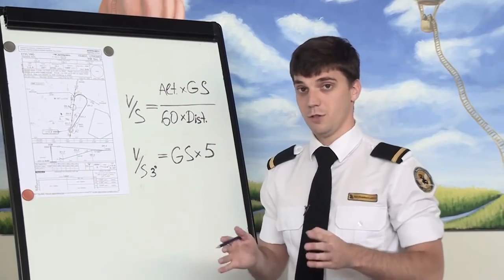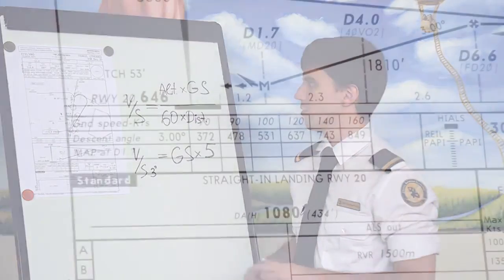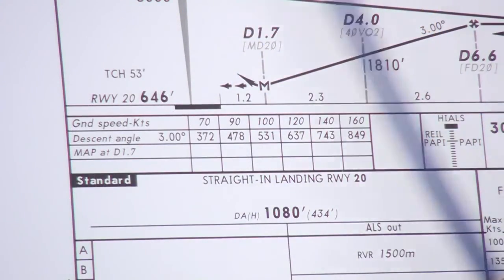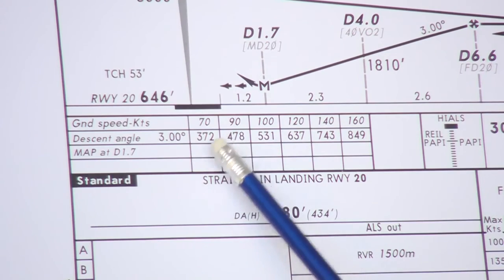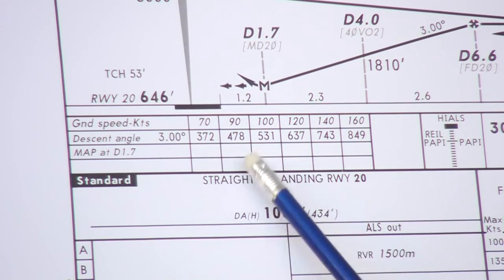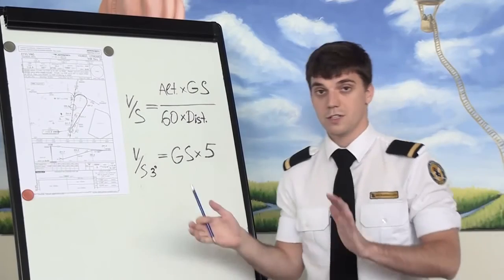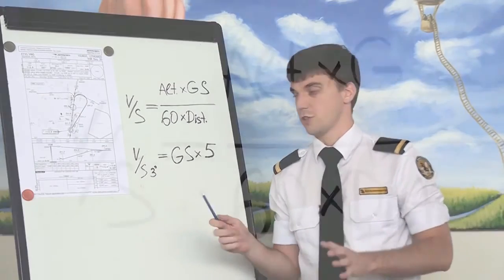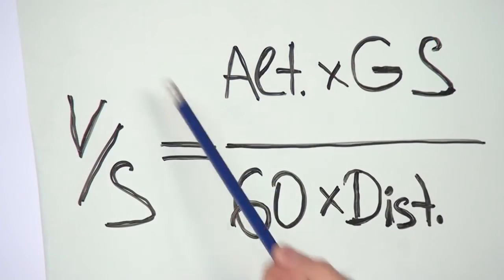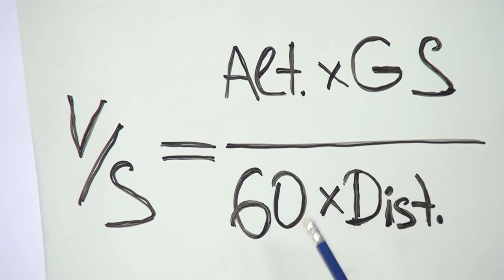For every non-precision instrument approach, you have a chart. And on this chart, there is a small table with your vertical speed required, depending on your ground speed. Also, there is a formula for this kind of calculation, which states vertical speed equals altitude to lose times your ground speed divided by 60 times distance to go.